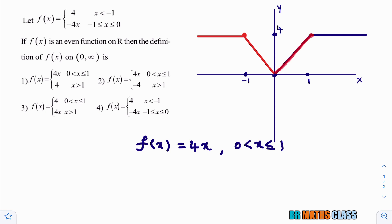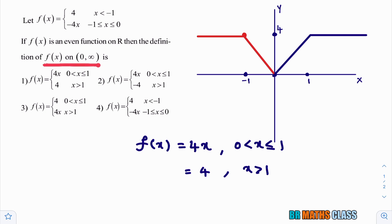I hope you are understanding. This is the graph of y equals 4x. And what is the other part? That is y equals 4, meaning f of x equals 4 for x greater than one. They are asking us to define the function on the open interval zero to infinity. The function is this one, so the first option is the correct answer.